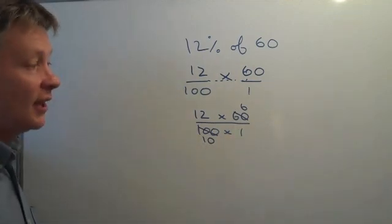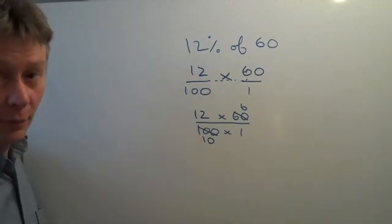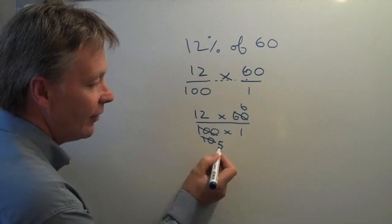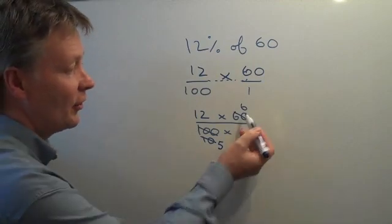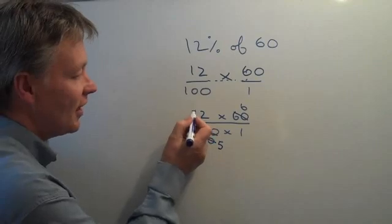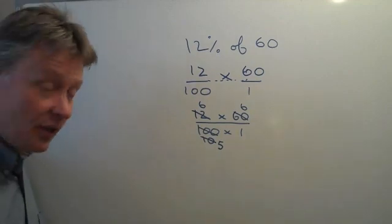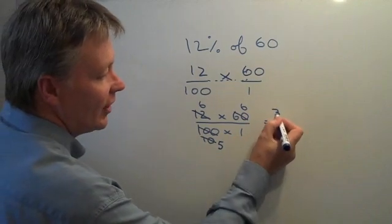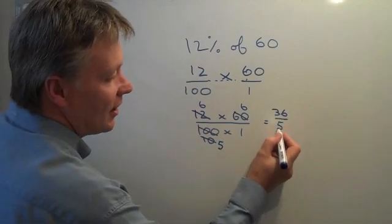Again, I can make my numbers a little bit smaller and easier to deal with. So I'm going to divide the top and the bottom by 2. If I do that, this 10 becomes 5. And I can either divide the 12 by 2, making it 6, or divide the 6 by 2, making it 3 — it doesn't really matter. But for this, I'll divide the 12 by 2 so it becomes 6.